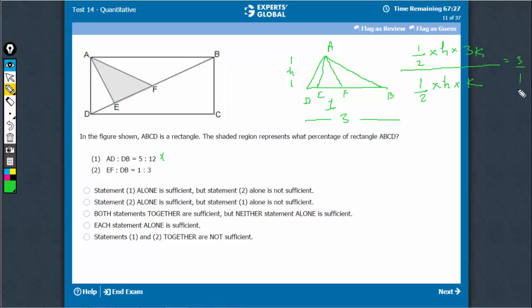And therefore, the percentage of the shaded part would be 1 out of 4. It would be 25%. So I can get to the answer 25% using statement 2 alone. The answer is option B.